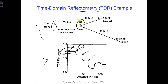Get out your in-class project notebook and write down a few notes about how we can use TDR to detect faults on transmission lines. Also, we could use TDR to check the load on a transmission line — that is, we can see if the impedance detected at the end of the transmission line is equivalent to the impedance we would expect from the load that we are using.